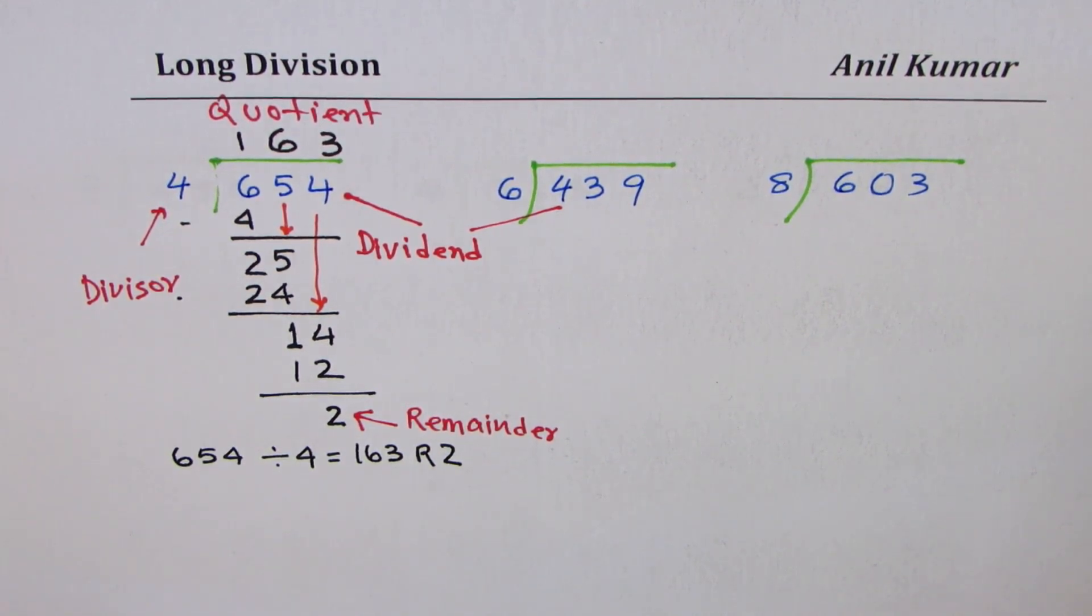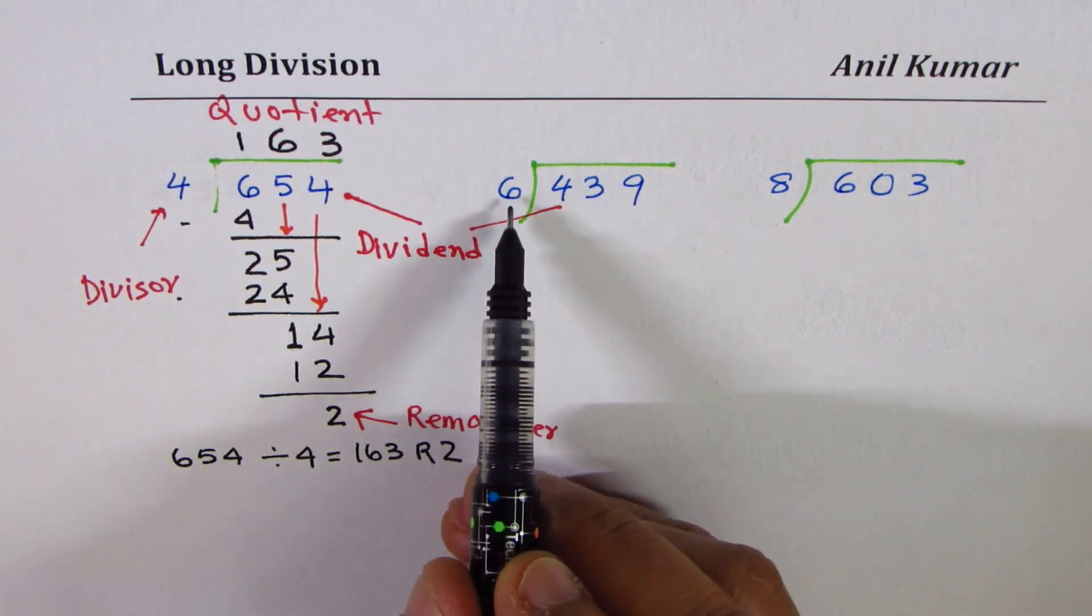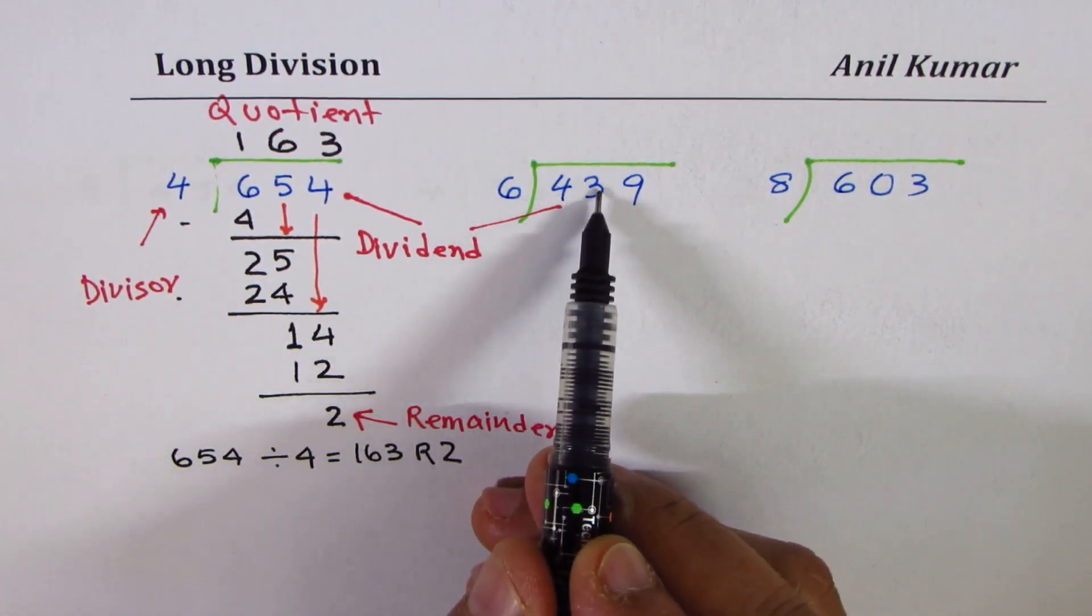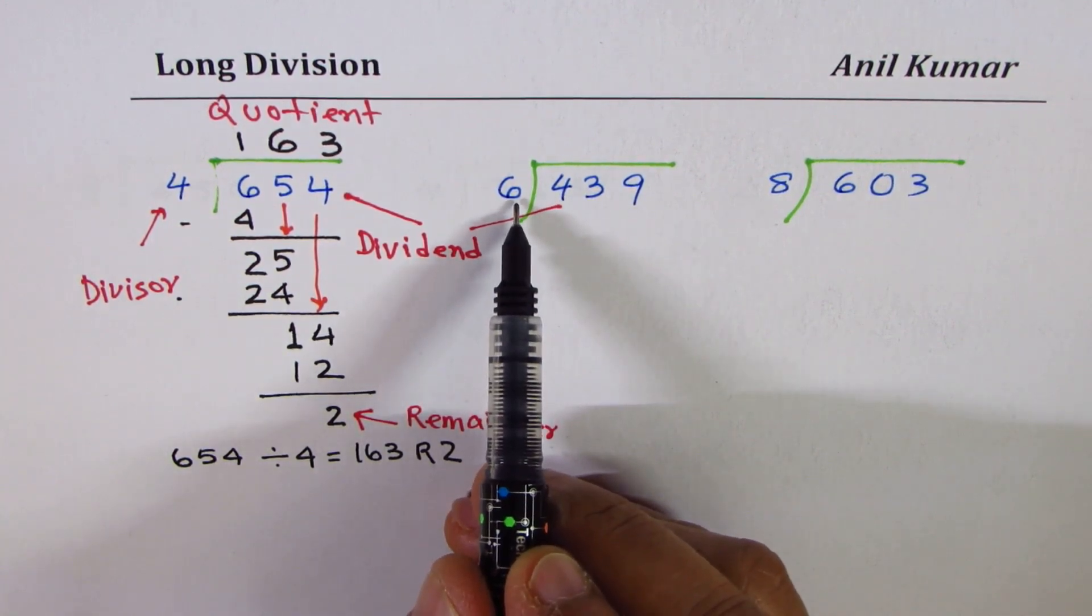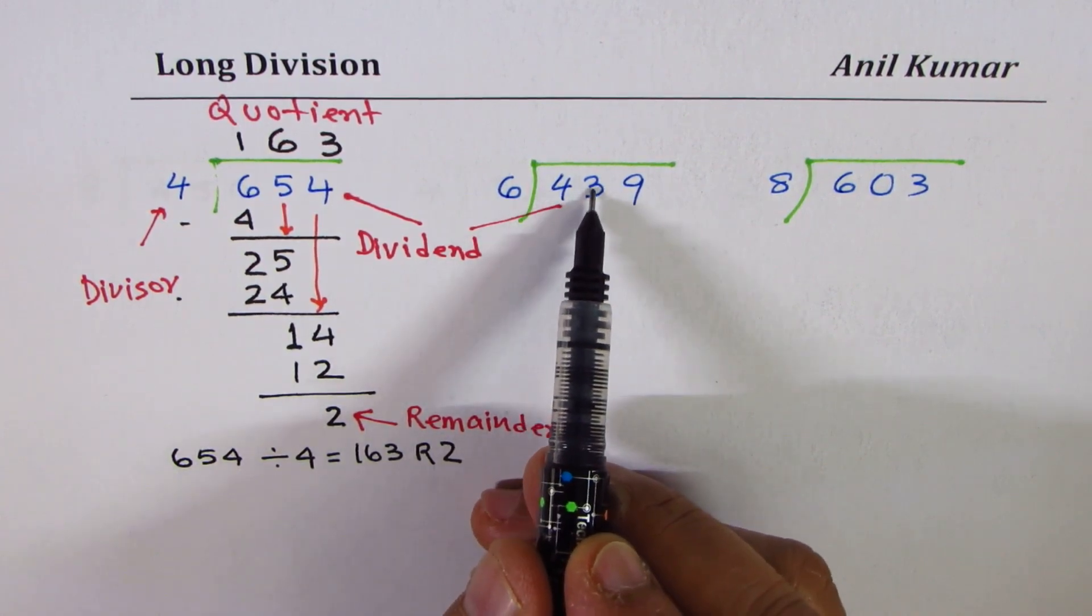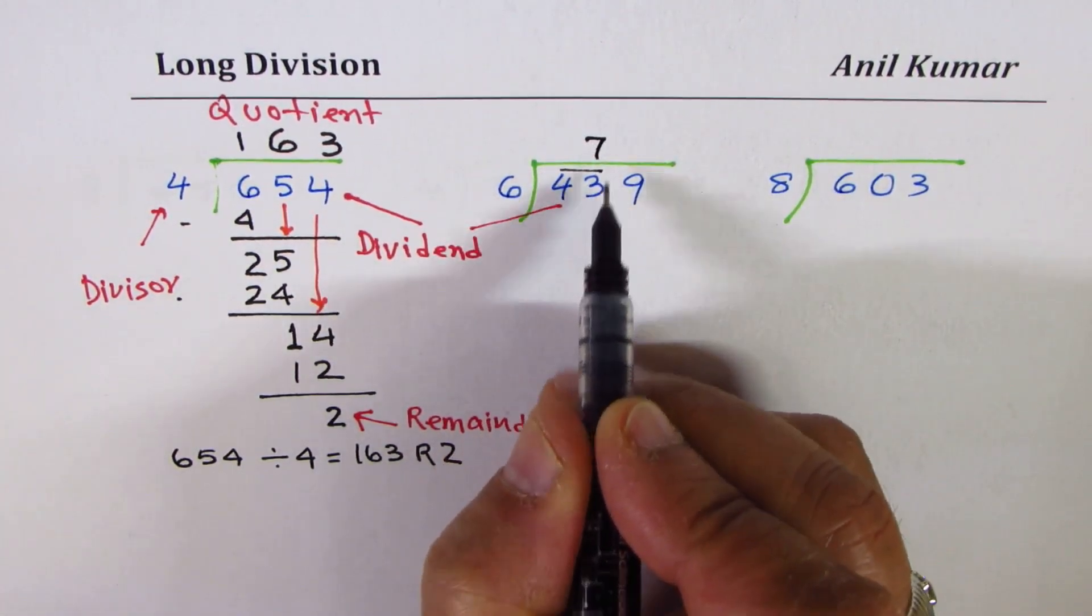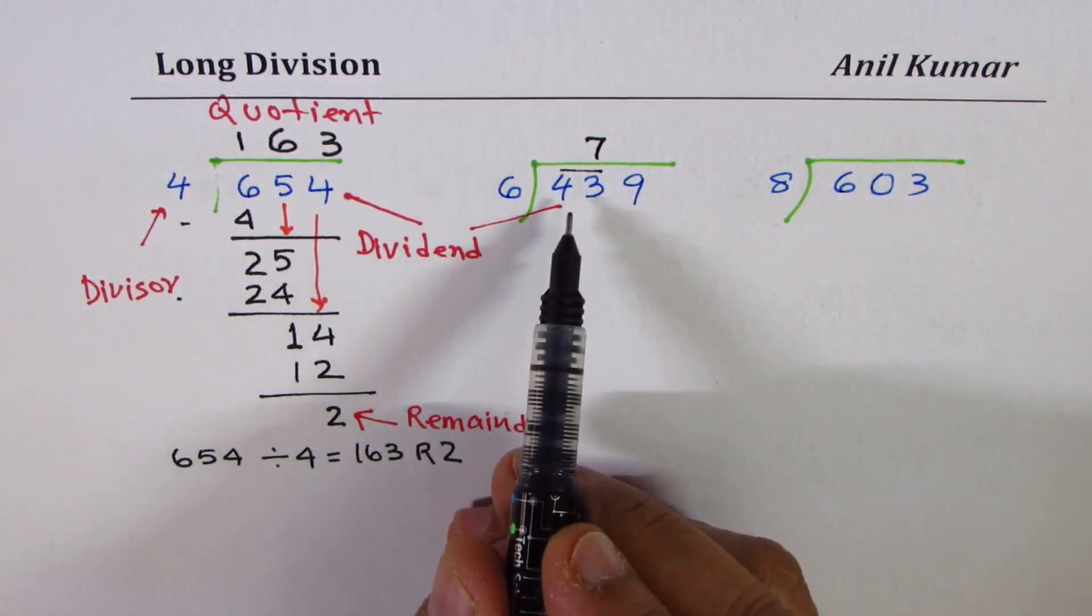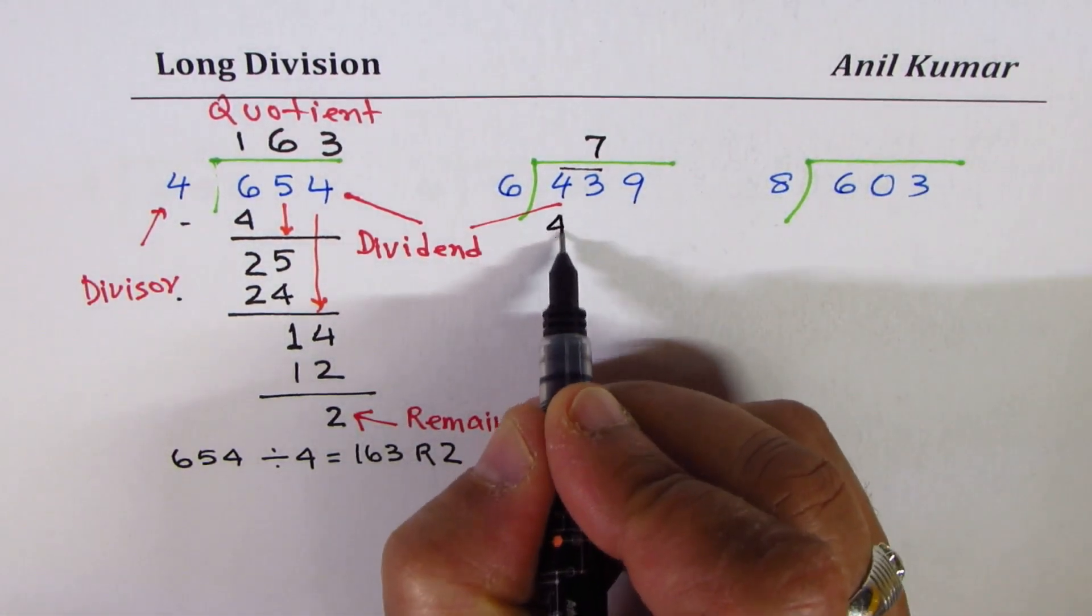You follow this method and do the next one yourself. Here is how you could do it. Here, 4 is smaller than 6. So you have to take 2 numbers at a time. Instead of just doing 4, which cannot be divided by 6, you will take 43. So 43, both of them together, could go 7 times. Write 7 above 3, showing that you have taken 2 numbers. 6 times 7 is 42.